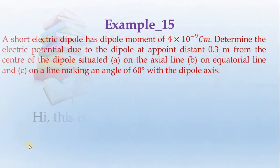Hi, this is Divakar Karupayya. Example number 15. A short electric dipole has a dipole moment of 4 × 10^-9 coulomb meter.